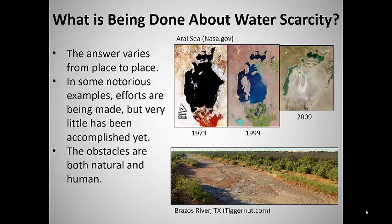An example from the United States is the Brazos River in Texas. The recent multi-year drought exacerbated problems of a dry climate, a large population, and heavy use for irrigation and industry. Various interest groups have been combining and suing each other in court to press for their interpretation of Texas's complex water allocation laws, and arguing about the wisdom of building more dams on the river. Meanwhile, at times, and in certain places, the river runs dry.